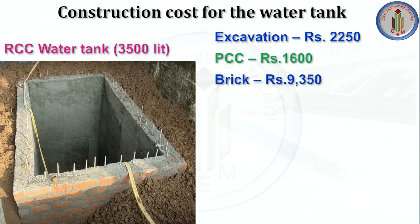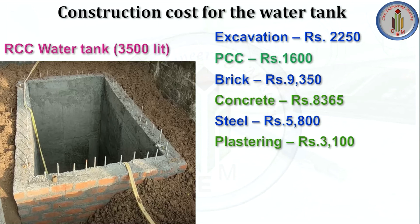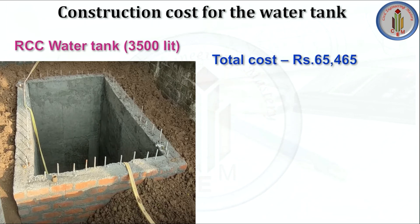Excavation and PCC costs are similar to the RCC water tank. Brick cost is 9350 rupees — the extra cost. Concrete cost is 8365 rupees, which is half the cost of the RCC water tank because only half the wall thickness uses concrete. Similarly, steel quantity is reduced to half — only one layer of reinforcement instead of two — giving a steel cost of 5800 rupees. Plastering and waterproofing costs are similar to the RCC water tank.